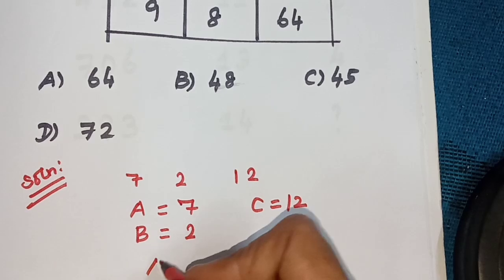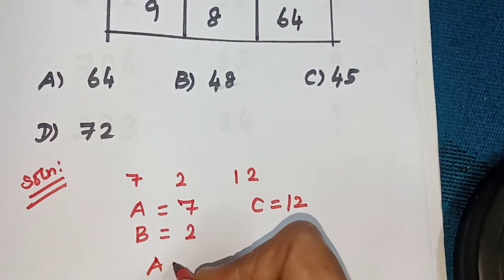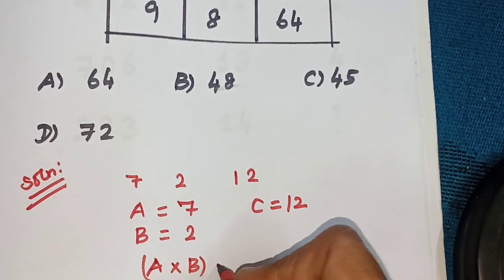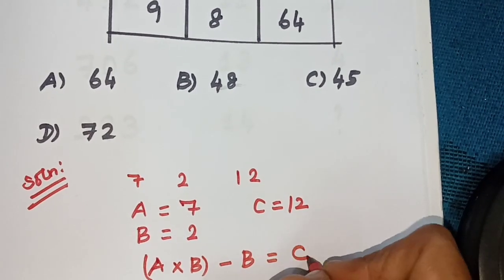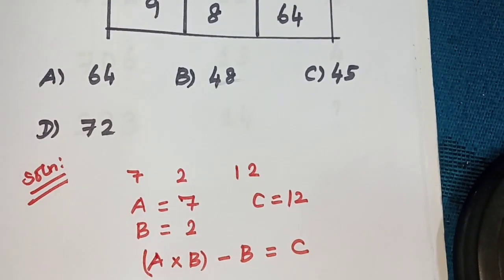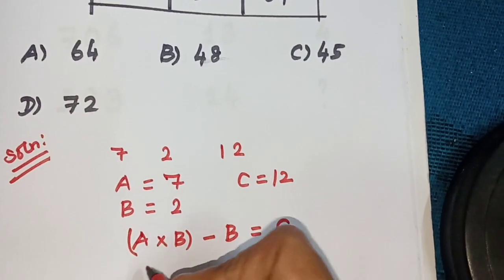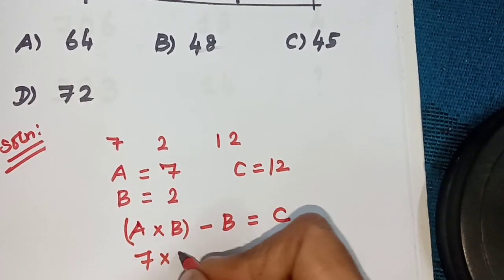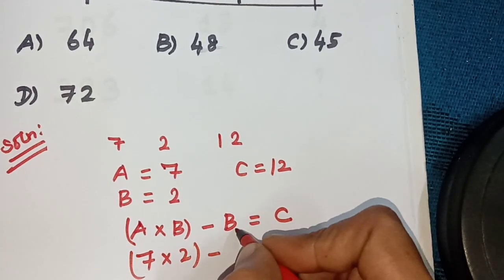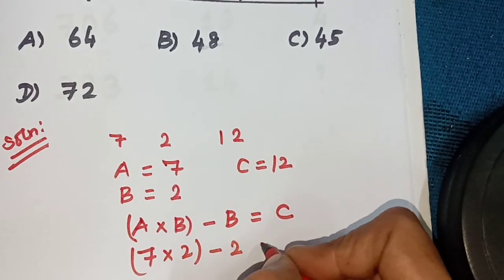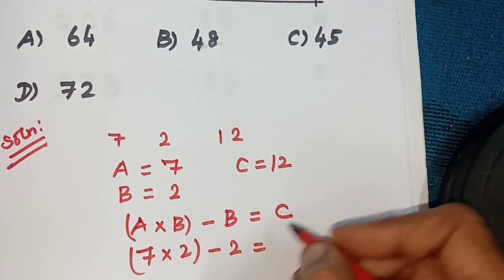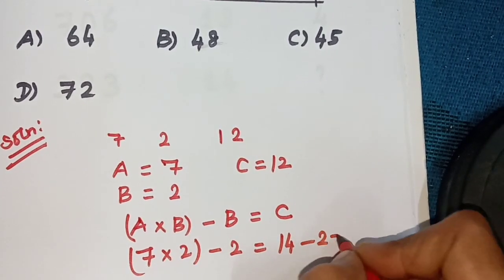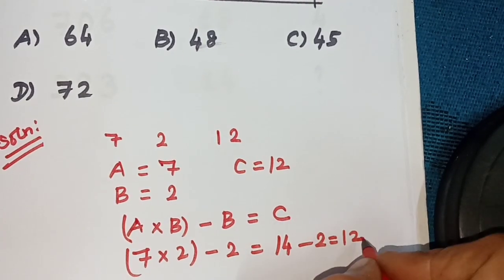Using algebra: A into B minus B equal to C. So, 7 into 2 minus 2 equals 14 minus 2 equals 12. C is 12.